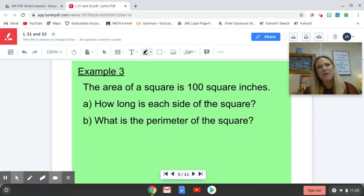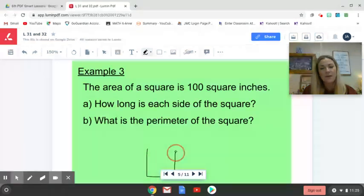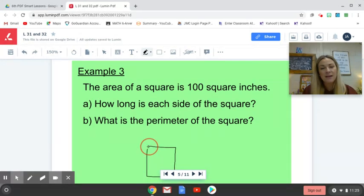Now, so this work is really kind of getting our brain prepared to do work with square roots. So looking at example three, the area of a square is 100 square inches. If it helps you to draw out a square, you should do that. We know that the area inside of the square is 100 square inches. How long is each side of the square? So we know what the space inside is. And then what's the perimeter of the square? Pause this video and do this work, and then unpause when you're ready to check.